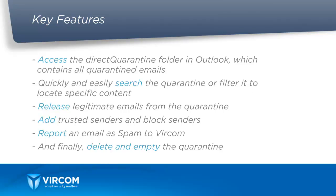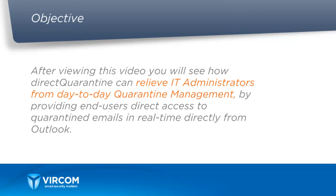With it you will be able to see how to access the Direct Quarantine folder which contains all of the quarantine emails. We'll be able to quickly and easily search the quarantine or filter it to look for specific content. We'll be able to release legitimate emails from the quarantine, add trusted senders and block senders, report an email as spam to Vircom, and finally how to delete and empty the quarantine. After viewing this video you'll be able to see how Direct Quarantine can relieve IT administrators from day-to-day quarantine management by providing end users direct access to quarantined emails in real time directly from Outlook.